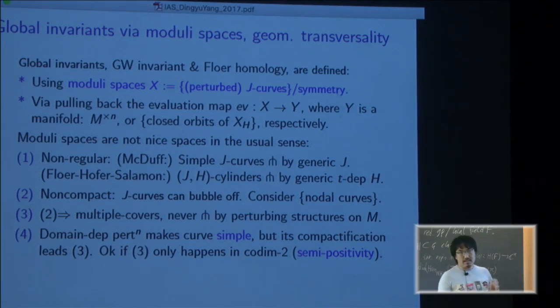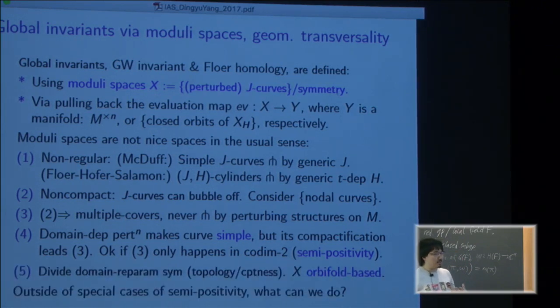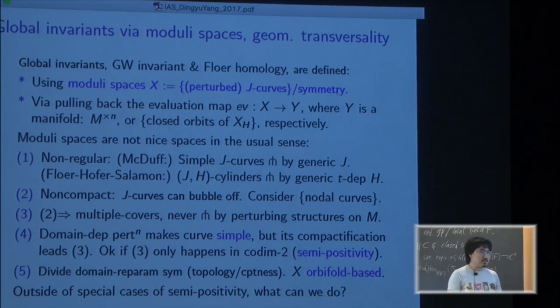But there is a special nice class of symplectic manifolds called semipositive which says the bad things happen only in codimension two, so you can get a pseudo-cycle. And you also have to divide it by the domain reparameterization symmetry which leads to X being an orbifold based theory object.